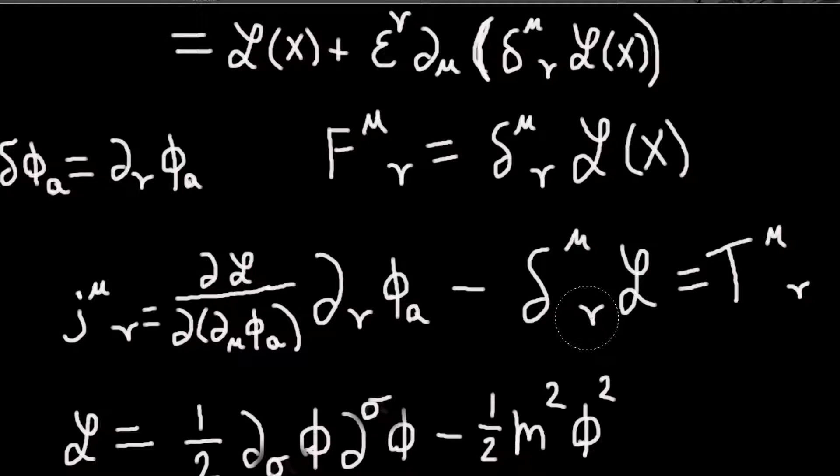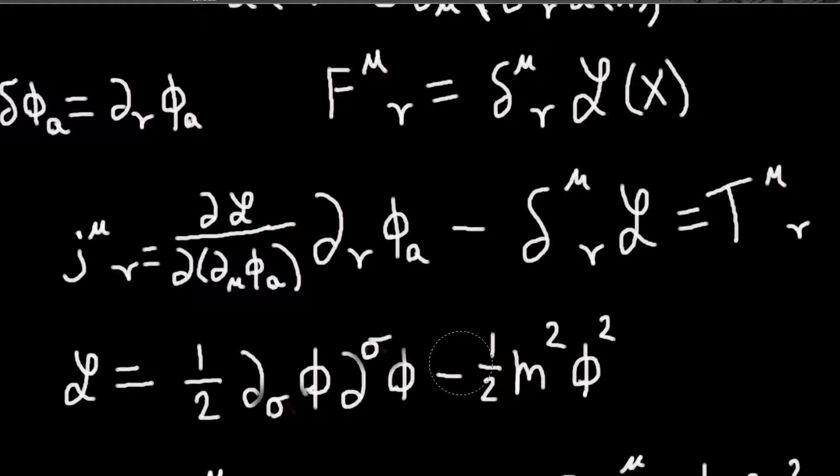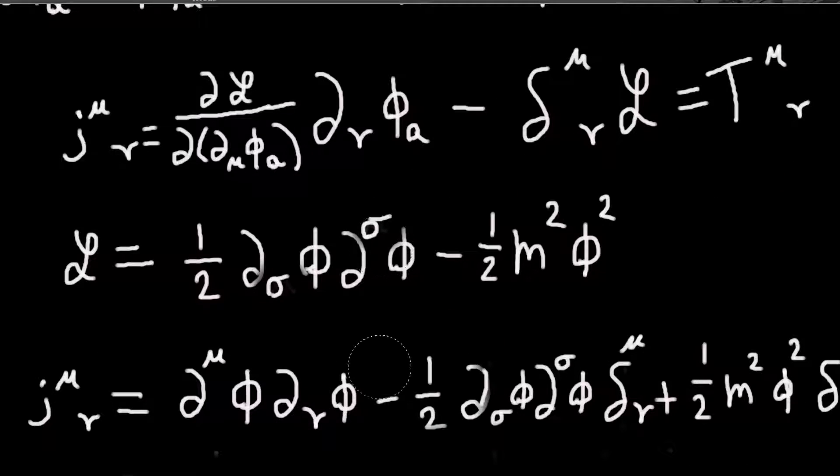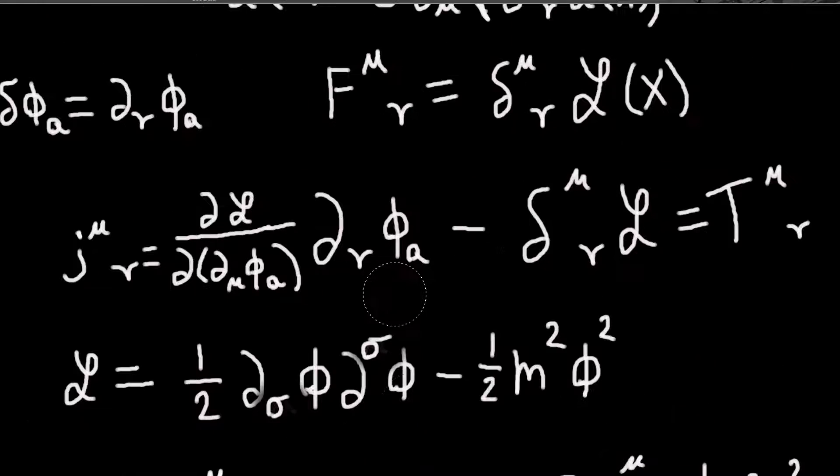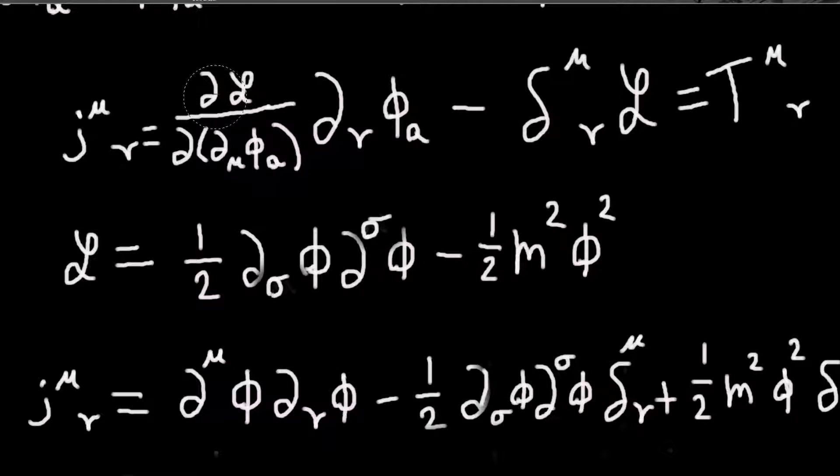Okay. So now that we've done that, let's work out, let's calculate the energy momentum tensor of the Klein-Gordon field. So we have our Klein-Gordon Lagrangian here. And we need to compute our current. So the first thing we need to do is compute this thing. But this is just the same thing we computed when we were doing the equations of motion.